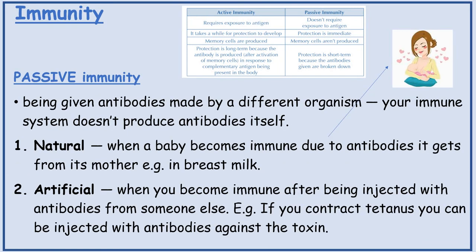Passive immunity is being given antibodies made by a different organism. Your immune system doesn't produce antibodies itself. This could be natural, when a baby becomes immune due to antibodies it gets from its mother, for instance in breast milk. Or artificial, when you become immune after being injected with antibodies from someone else.